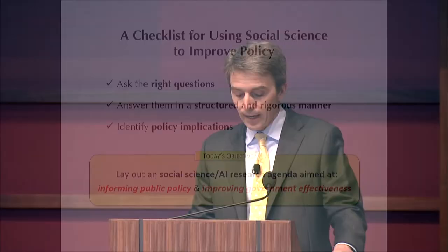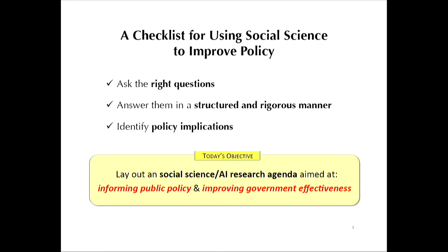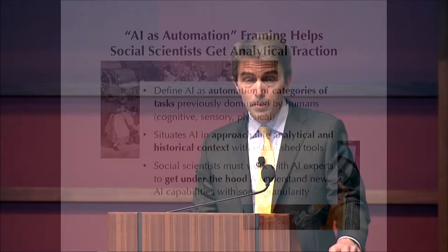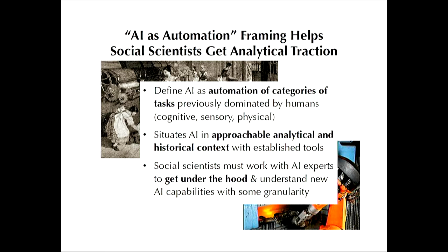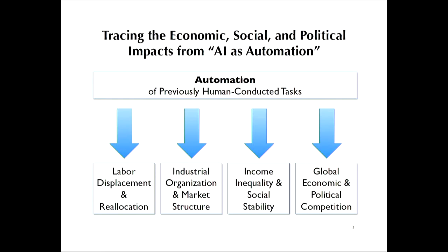What I would like to do today is to lay out a collaborative research agenda with two goals: informing public policy and improving the effectiveness of governments. Establishing the right frame for this research can be difficult, given the sometimes fantastical understanding of AI among social scientists and policymakers. Boiling down the essence of AI as the automation of tasks previously dominated by humans makes the subject tractable for the social scientist. We can then systematically investigate the impact of such automation on the labor market, on industrial organization, on income inequality, and on global competition.